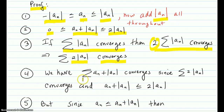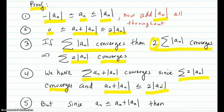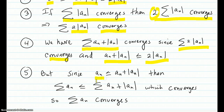The series of a_n plus |a_n| converges, because we know the series Σ|a_n| converges due to our given statement. The terms of our series a_n + |a_n| are less than or equal to 2|a_n|. So by the comparison test, since each term is less than or equal to something that converges, this series also converges.